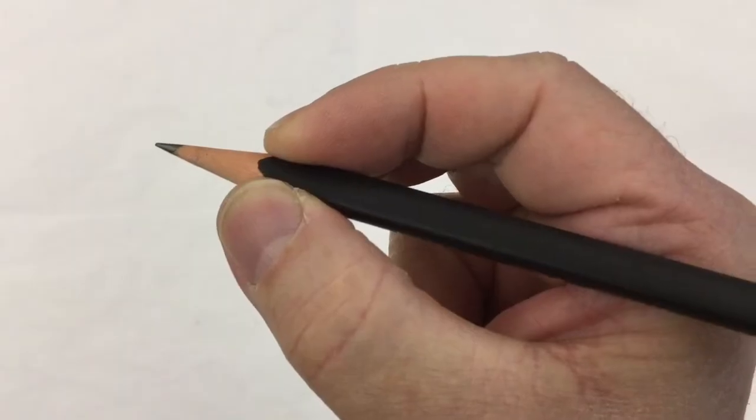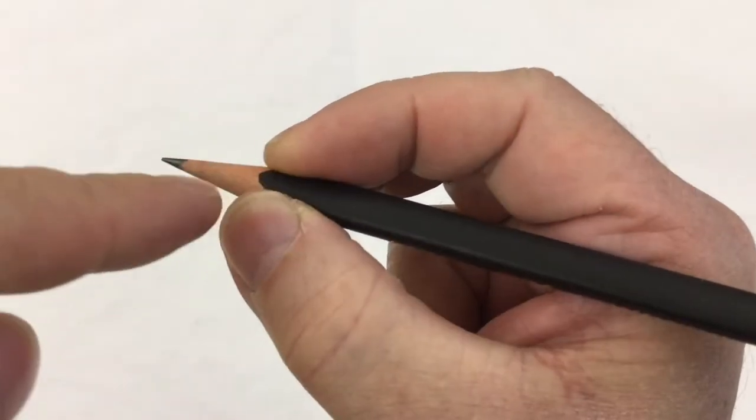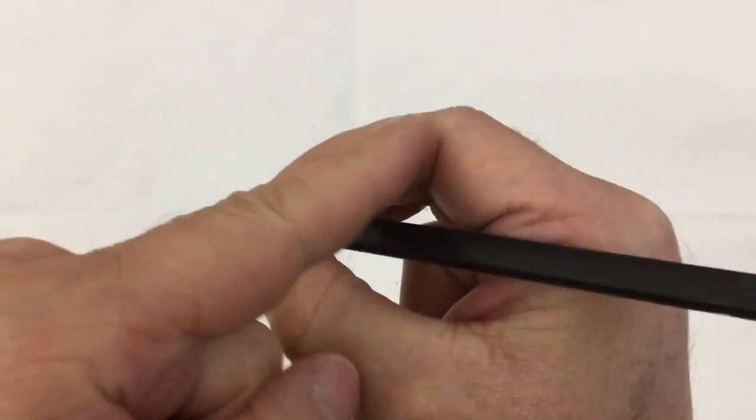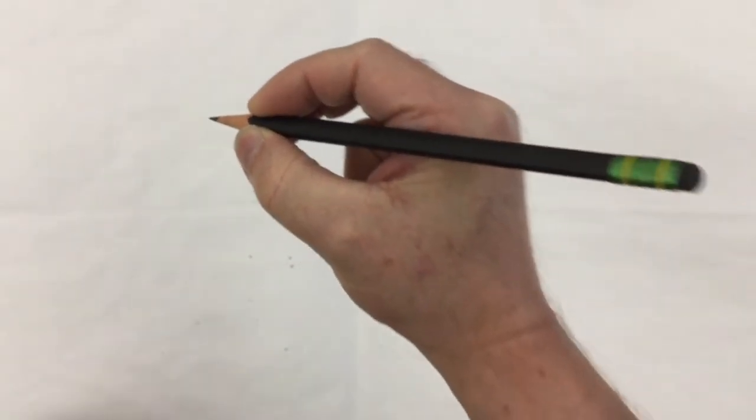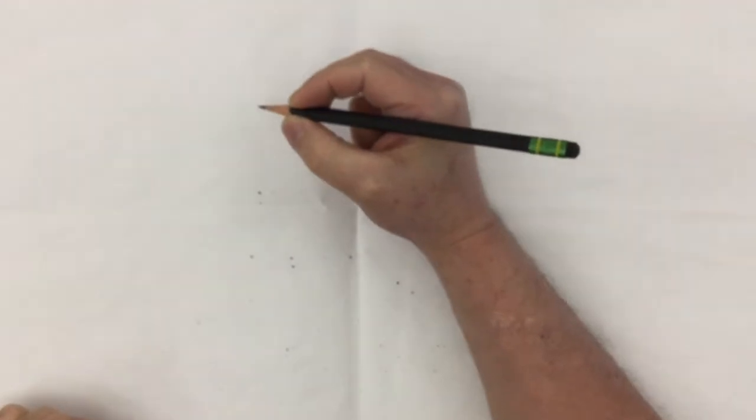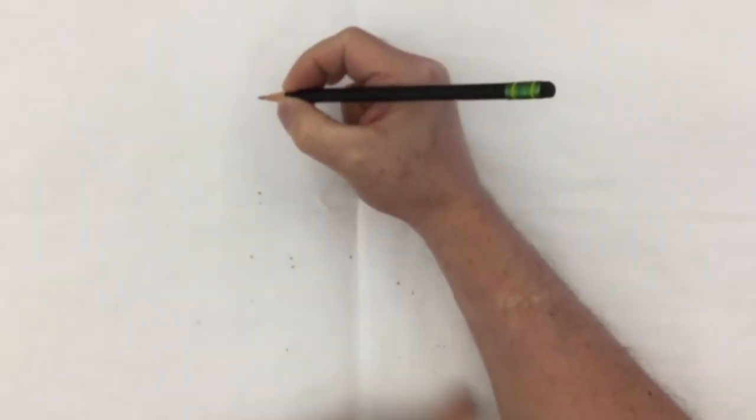You can see where I'm holding it, right about where the paint ends. I've got this nice teardrop shape right in here. When I write, I want to make sure that my arm is flat on the desk, not up off the desk but flat.